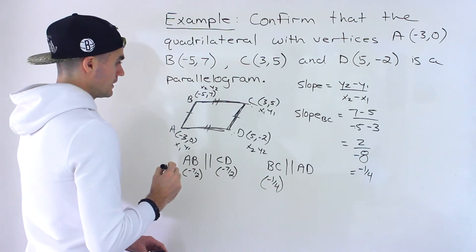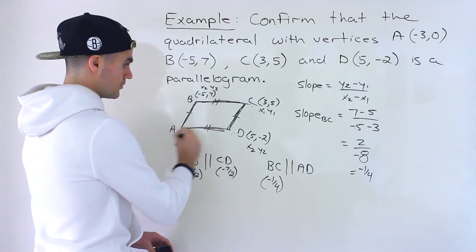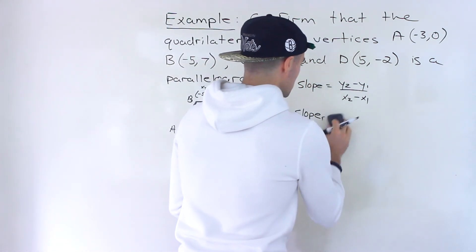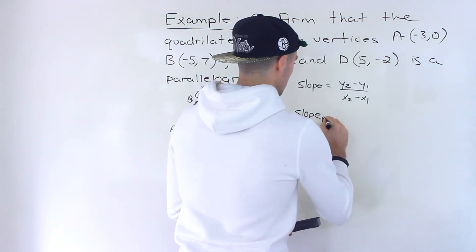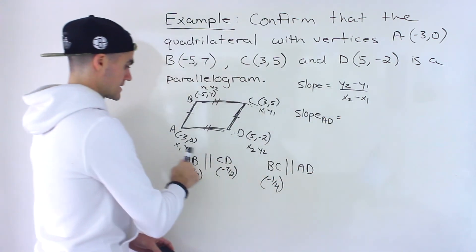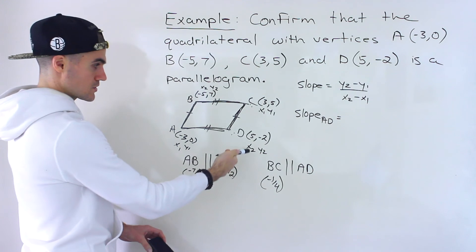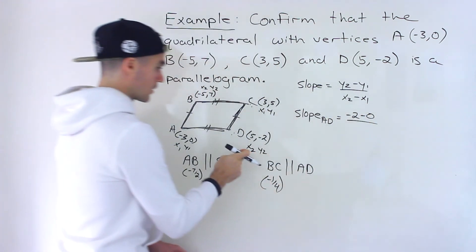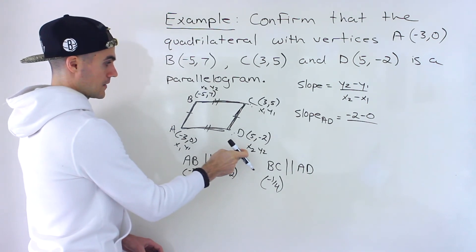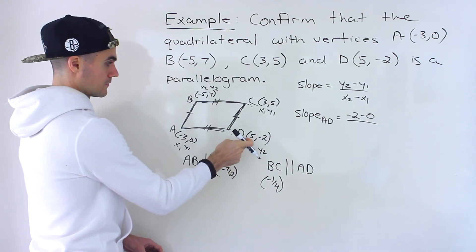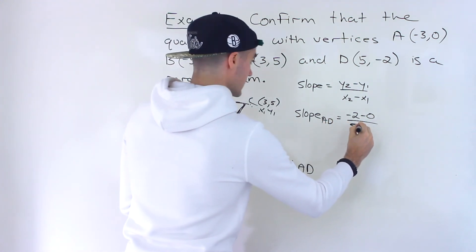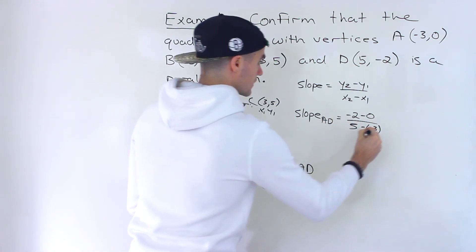And then finally, the slope of AD. Again, we labeled those points already as X1, Y1, X2, Y2. So we would do Y2 which is -2 minus 0, over X2 which is 5 minus X1 which is -3, like that.